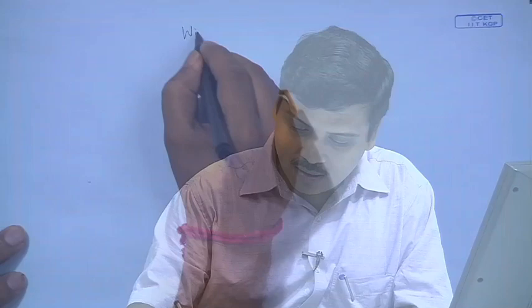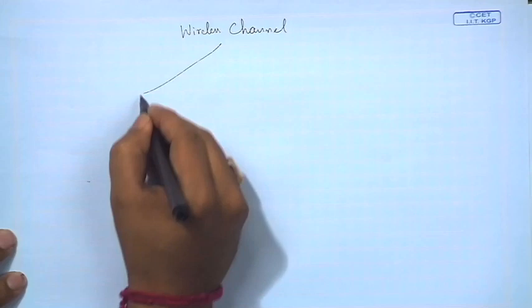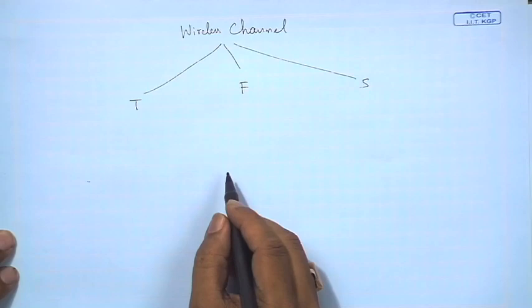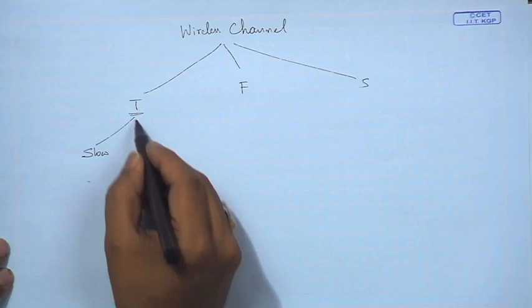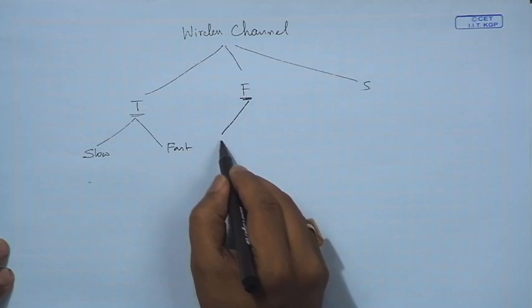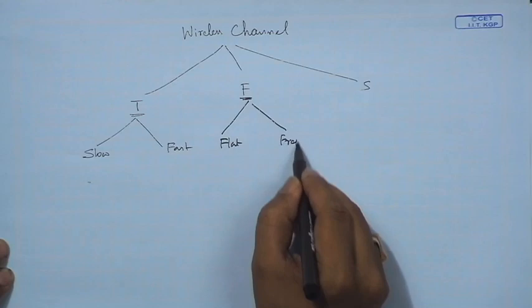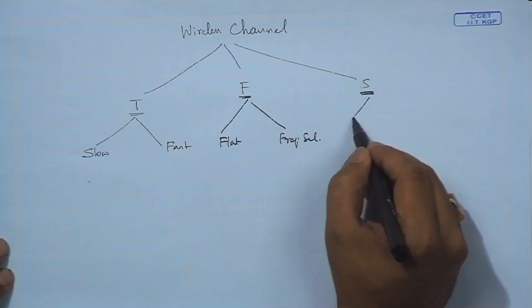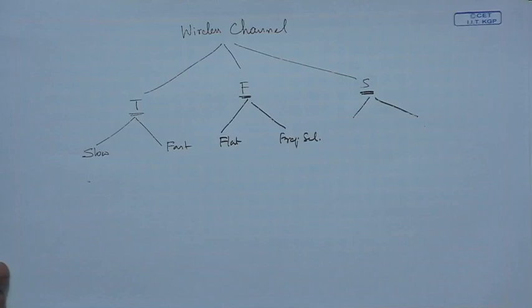Welcome to the course on Fundamentals of MIMO Wireless Communications. We have been looking closely at the small scale propagation models, covering flat fading, frequency selective fading — the time and frequency dimensions. We have specified the wireless channel in the time dimension, frequency dimension, and space dimension. In the time dimension we classified it as slow fading and fast fading; in frequency, flat fading and frequency selective fading. Now we reach the spatial dimension, which could be poor scattering or rich scattering.